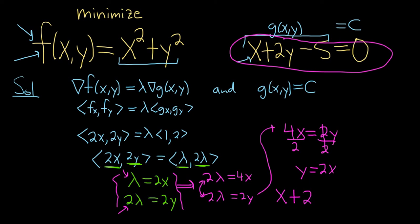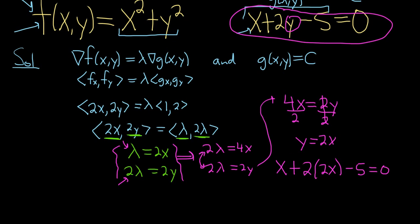And since y is 2x, we can replace it with 2x. And minus 5, and that's equal to 0. So again, just replacing the y with 2x. Let's keep going. This gives us x plus 4x minus 5 equals 0. So x plus 4x, that's 5x minus 5 equals 0.